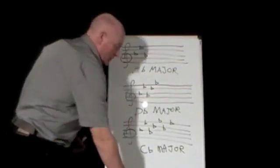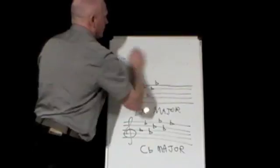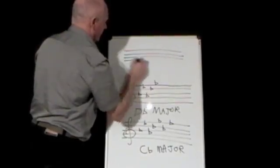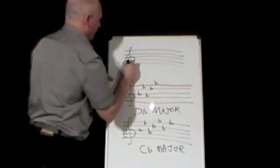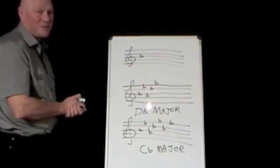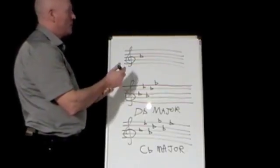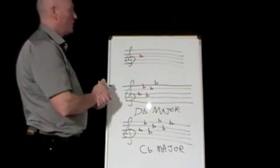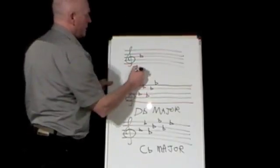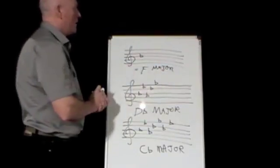Now the only one in the circle of fourths that's going to catch you out maybe is F major, because F major is the one with just one flat. Really, with that one you just have to remember that the key with one flat is F major. If you think about it, we're in the circle of fourths, and we've started with C major. We've come up four steps to get our first flat. So the key signature with one flat in is C, D, E, F.